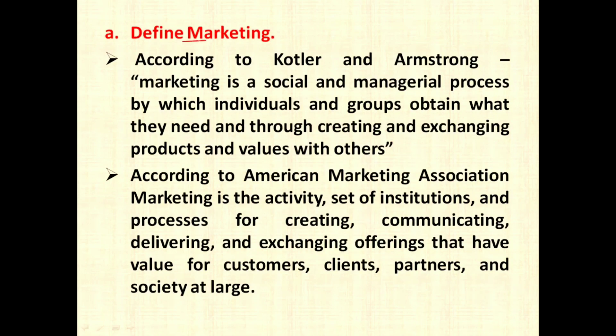The first question is: define marketing. According to Kotler and Armstrong, marketing is a social and manageable process by which individuals and groups obtain what they need through creating and exchanging products and value with others. So marketing is a social as well as manageable process, where individuals or groups obtain what they want by giving something in return, which is of value to the other party.